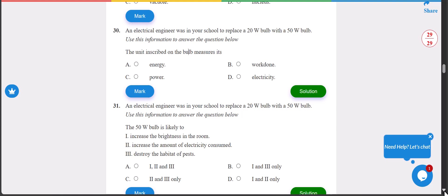Number 30: an electrical engineer was in your school to replace a 20 watt bulb with 50 watt bulb. Use this information to answer the question below. The unit inscribed on the bulb measures power. 30 is C, it's power.